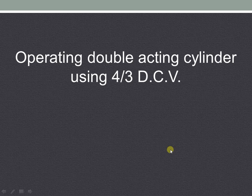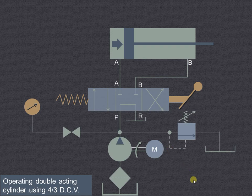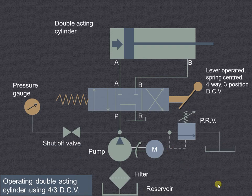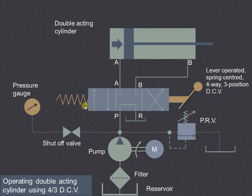This video explains operating a double acting cylinder using a 4 by 3 direction control valve. We have drawn this particular circuit showing the various components: the reservoir, filter, pump driven by the motor, shut off valve, shuttle valve, pressure gauge, and this 4 way 3 position direction control valve, also called a 4 by 3 direction control valve.